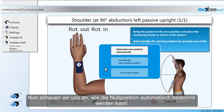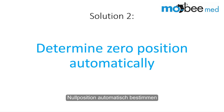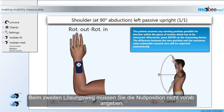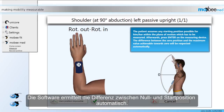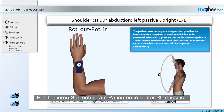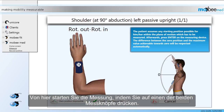Now we are going to take a look at how to determine the zero position automatically. When you have selected the second solution, you do not have to pre-indicate the zero position. The software automatically determines the difference between zero and starting position. You simply place Mobi on the patient in his starting position. From there you start the measurement by pressing one of the measuring buttons.